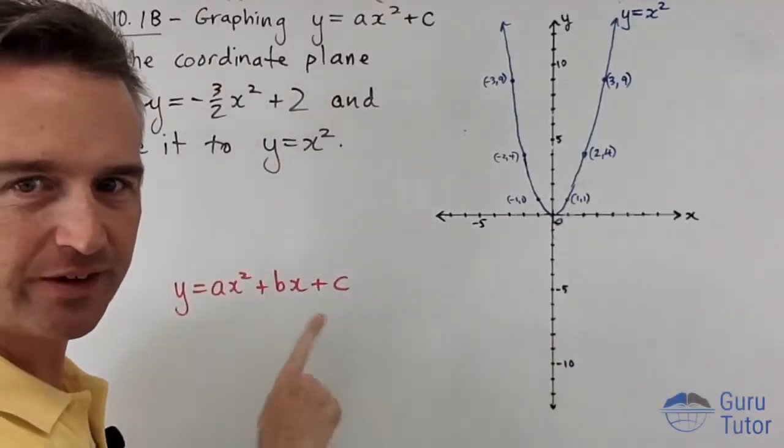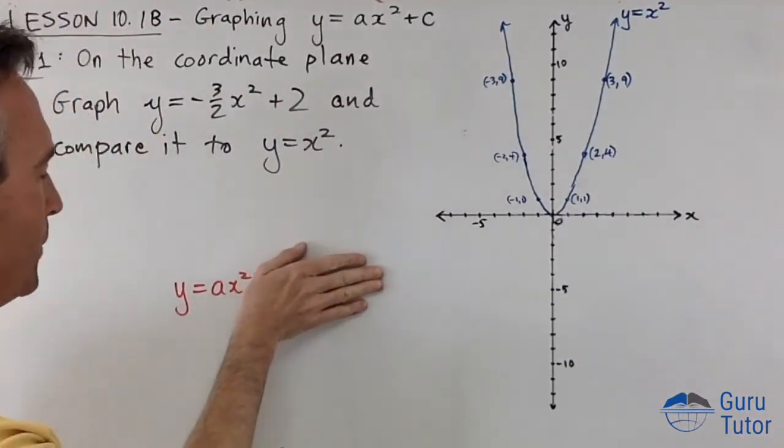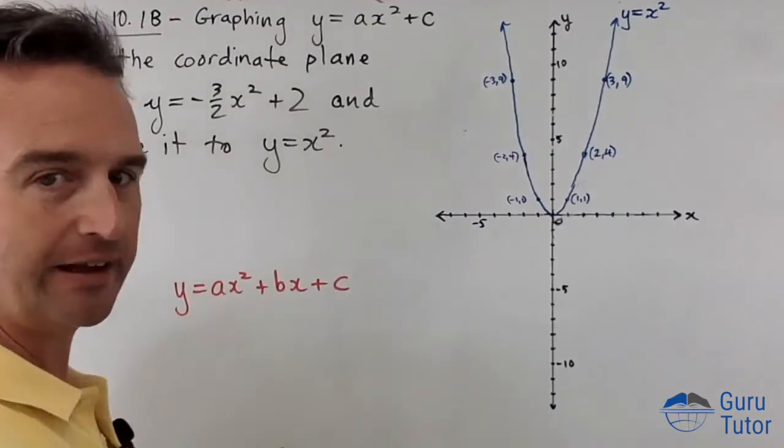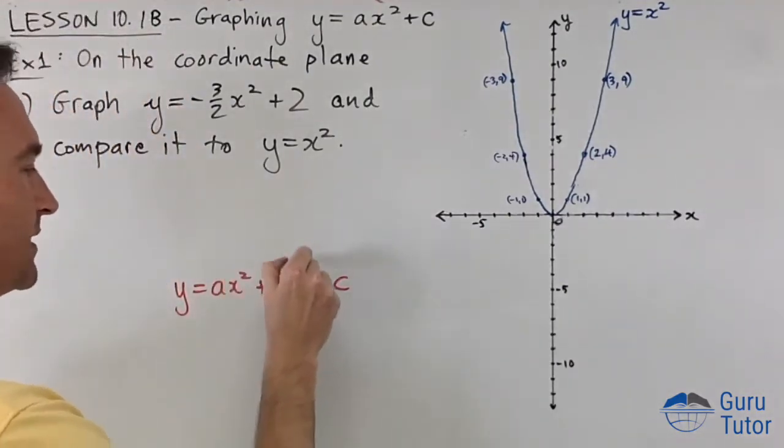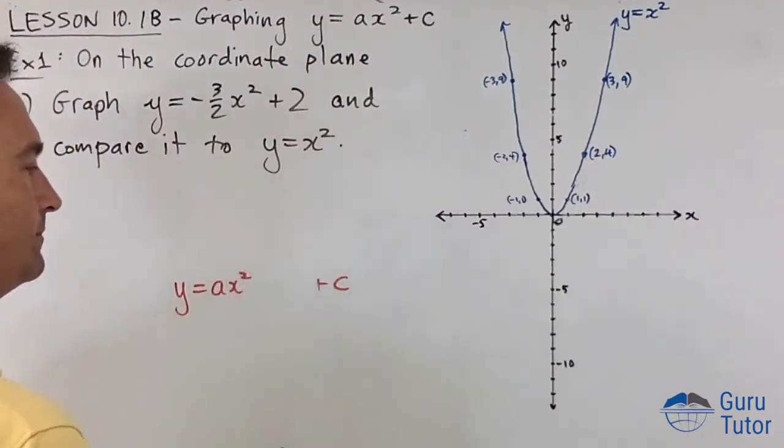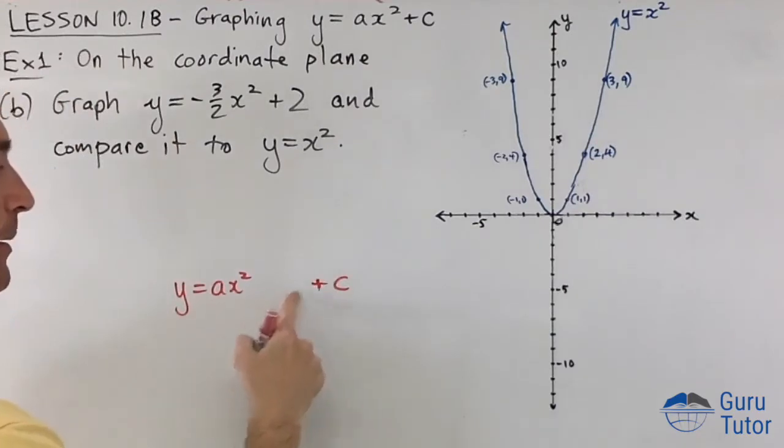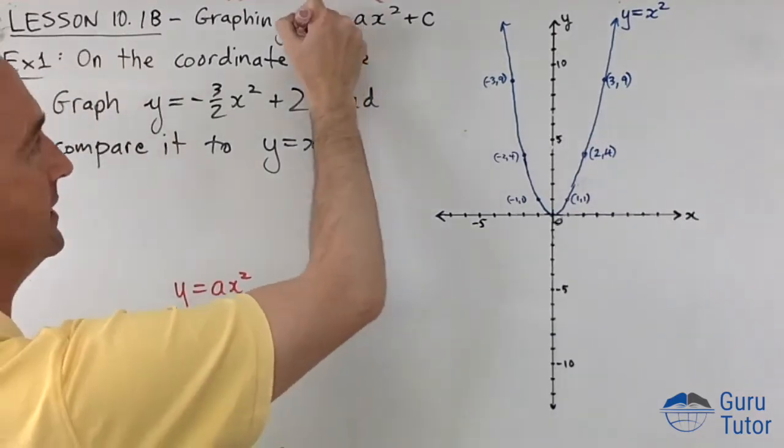We were looking at a quadratic function, and we looked at y equals ax squared. Today what we're going to look at is what happens when we have the c there. The b term is going to come a bit later, so we're going to forget about the b term for now. What happens when we've got y equals something x squared plus something? That's what today's lesson is about.